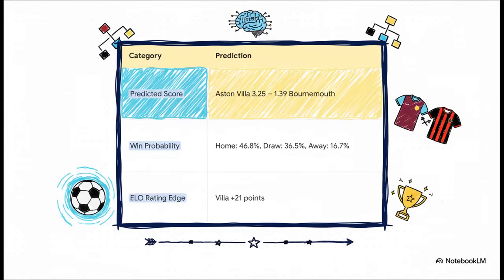And here we go again. The AI makes another strong call for the home team. It predicted a decisive Villa win with a probability of almost 47%. And look at that predicted score, 3.25 to 1.39. The AI was expecting goals, a lot of them, and it was pretty sure Villa would be the one scoring them.